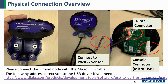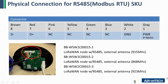This is the image of our LoRaWAN node. Please open the case and you will see there is a board with two connectors. The first connector is the data connector and the power connector for your sensor and power supply. The other connector is the console connector. Please prepare a Micro-USB cable to connect the node with your computer. After connecting, you will need the driver for our board, so please download the driver.